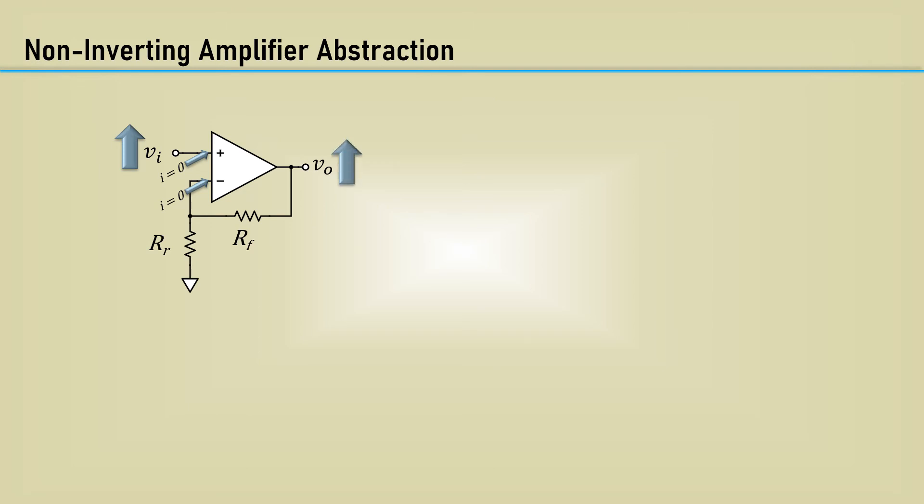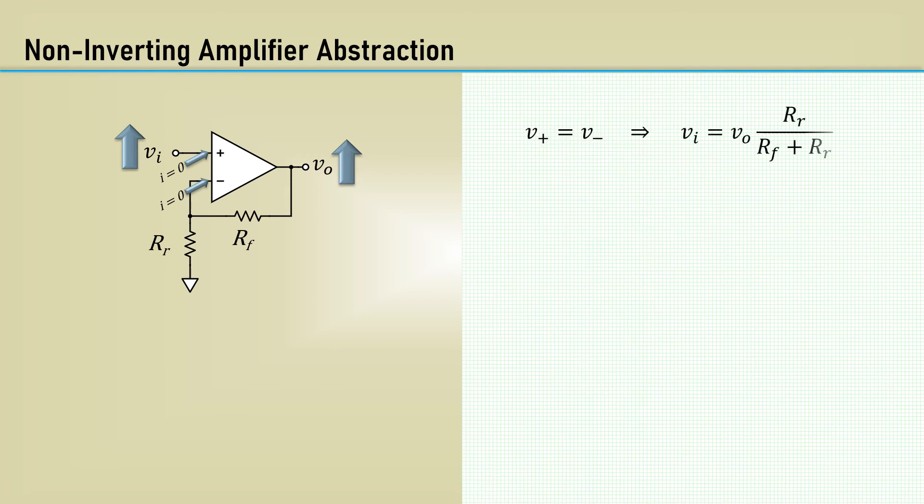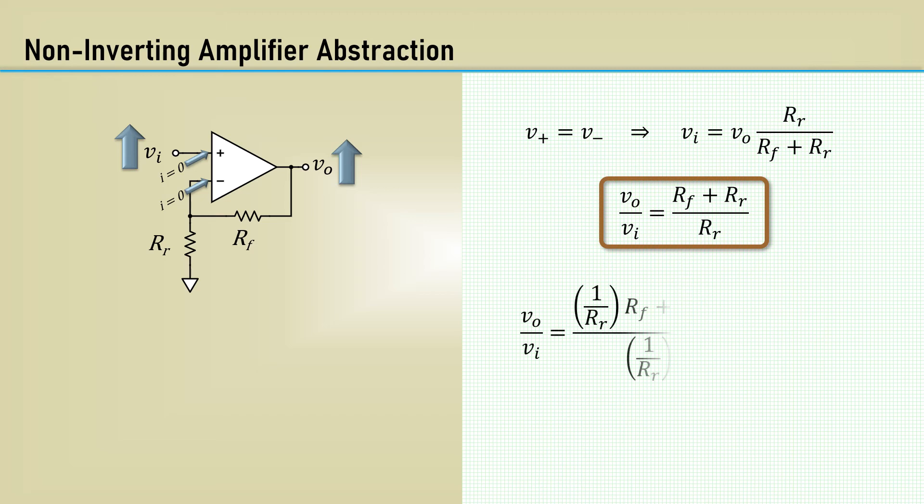Using the abstraction that there is zero volts difference between the inputs because of the infinite gain assumption, we can write the equation for VI as a voltage divider between the output and the inverting input. We rearrange the terms of gain, which is VO over VI. I am highlighting this expression because in later examples, it will become more meaningful and useful. To get the standard textbook equation for the gain, we eliminate the duplicate R sub R term by multiplying 1 over R sub R in the numerator and denominator. That gives us the gain as 1 plus RF over RR.